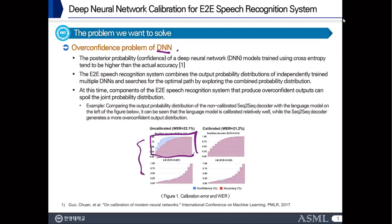The E2E Speech Recognition System combines the alpha probability distributions of independently retrained multiple DNNs and searches for the optimal paths by exploring the combined probability distribution. At this time, components of the E2E Speech Recognition System that produce overconfident output tend to dominate the joint probability distribution.